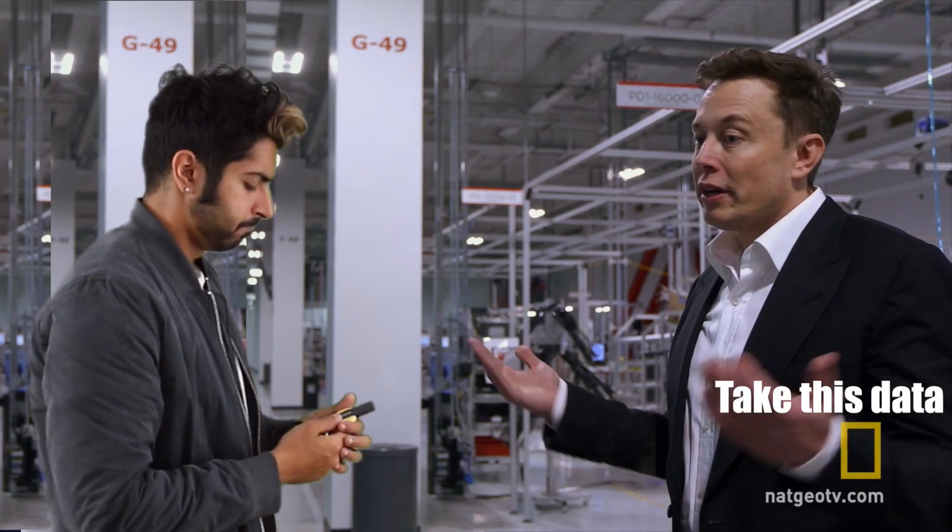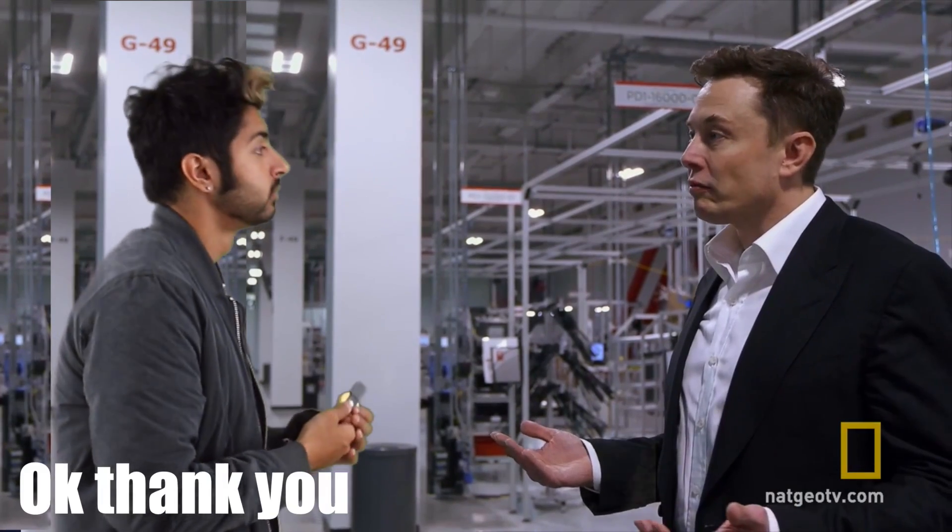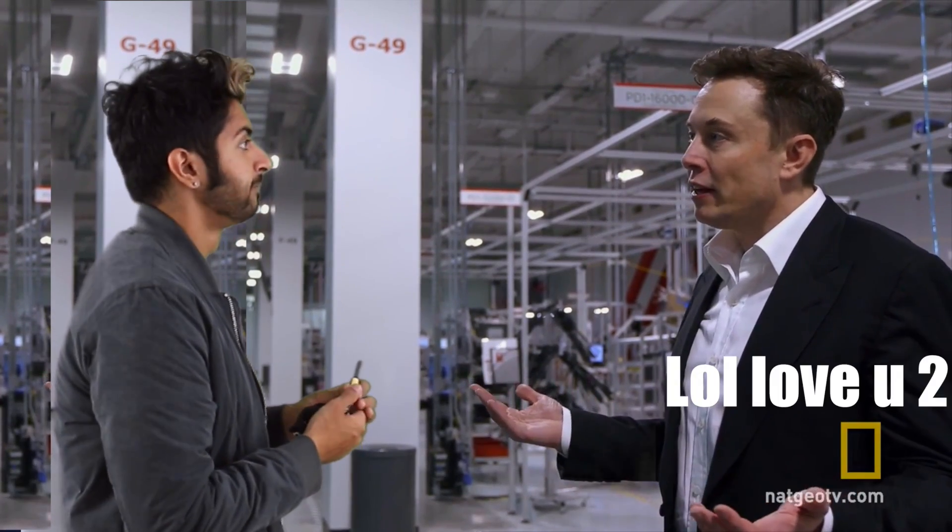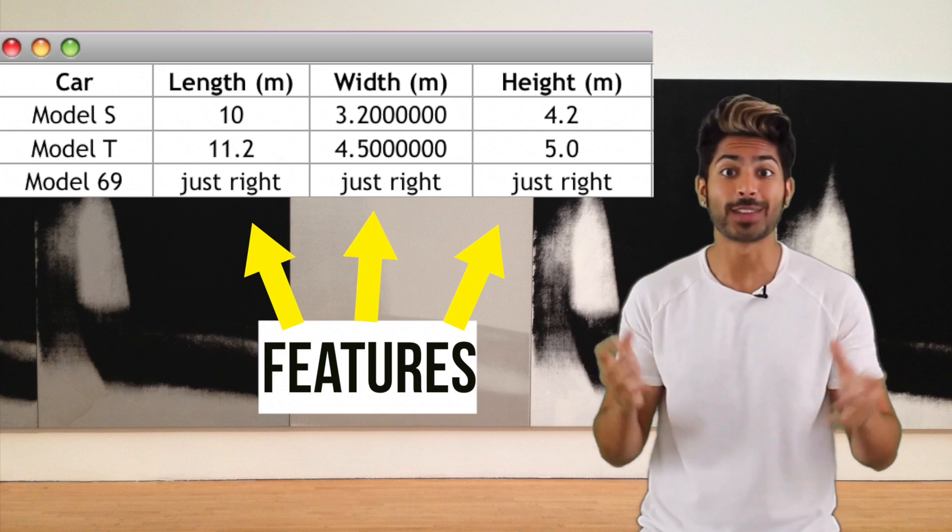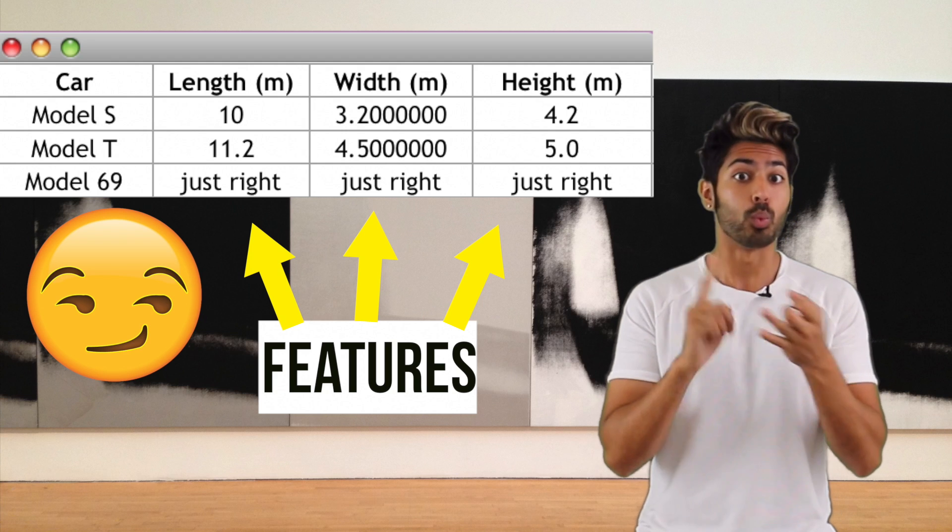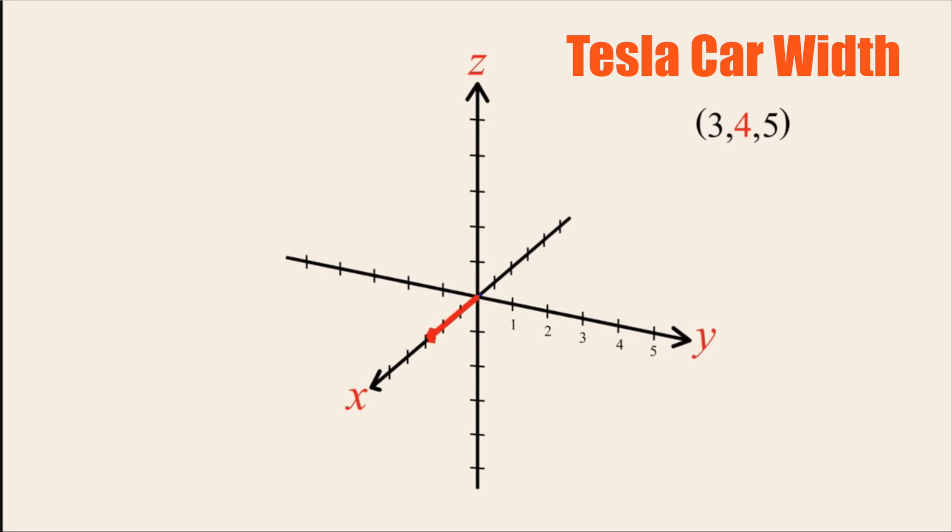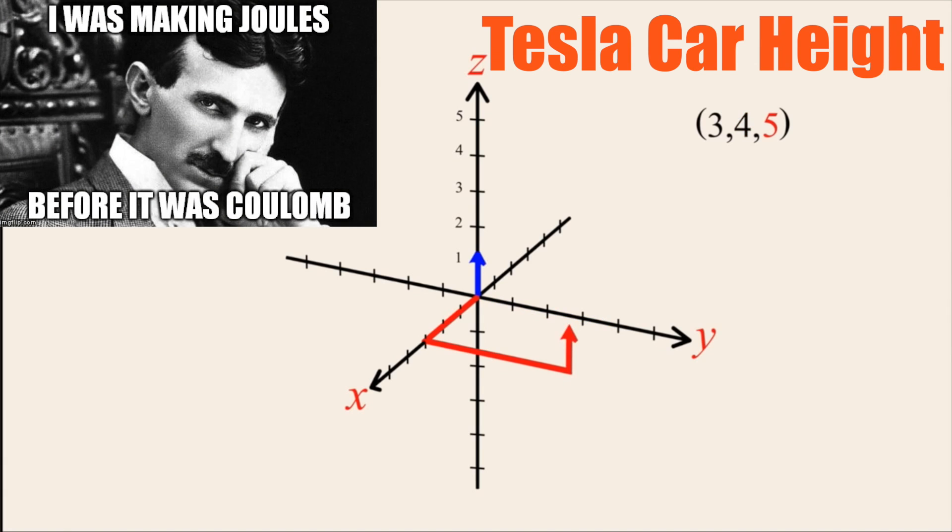Let's say you're a manager at Tesla and you're given a data set of some measurements for each car that was produced in the past week. Each car on the list has three measurements or features: its length, width, and height. So a given car can then be represented as a point in three-dimensional space where the values in each dimension correlates to one of the features we are measuring.